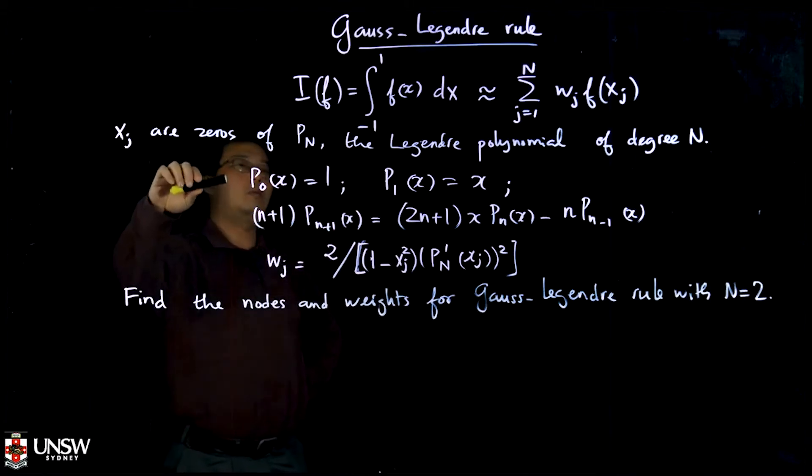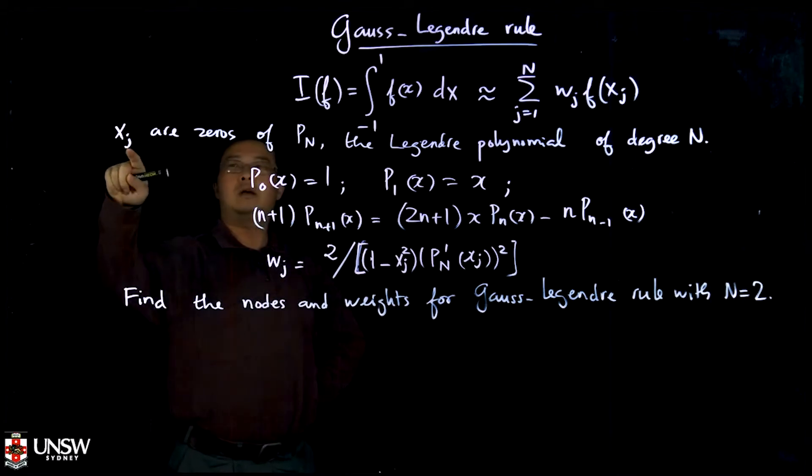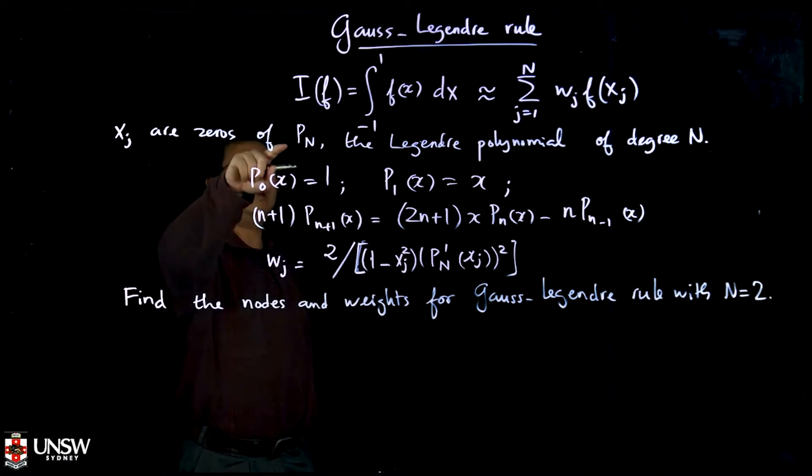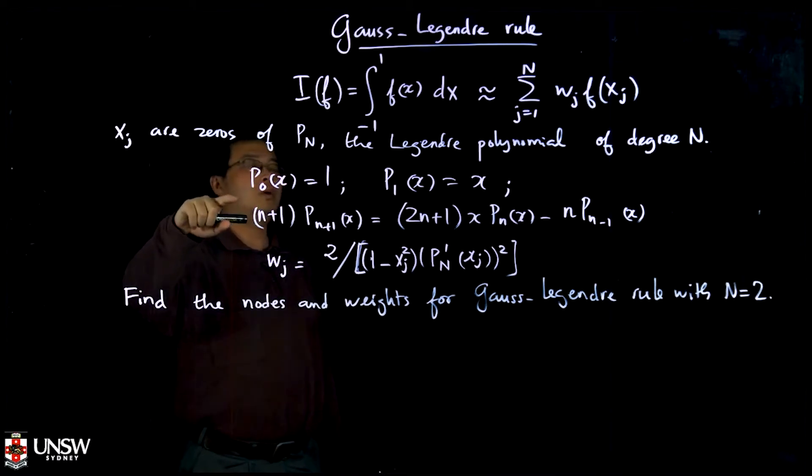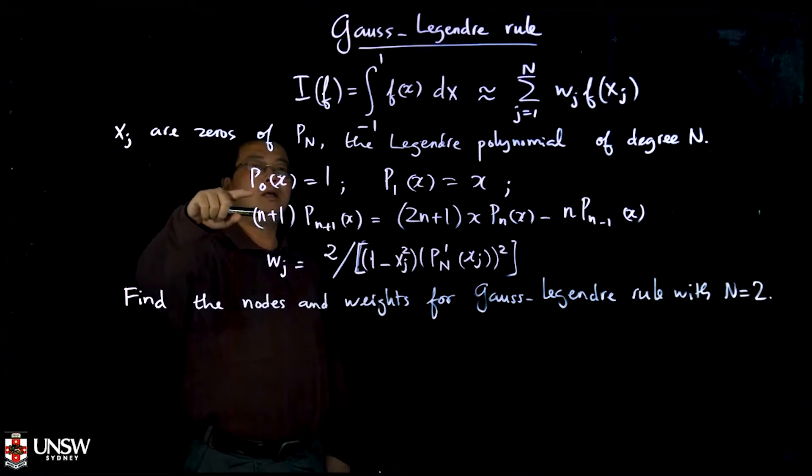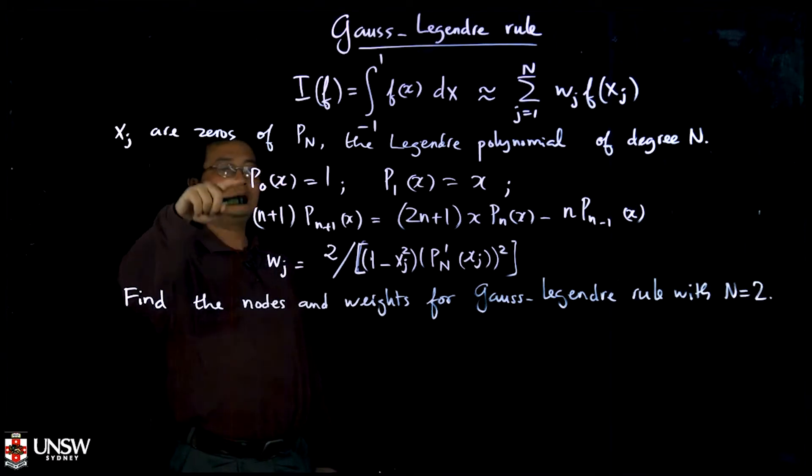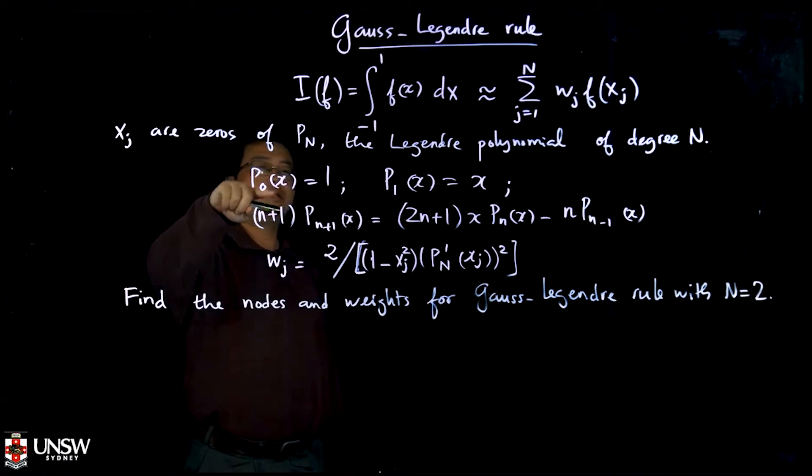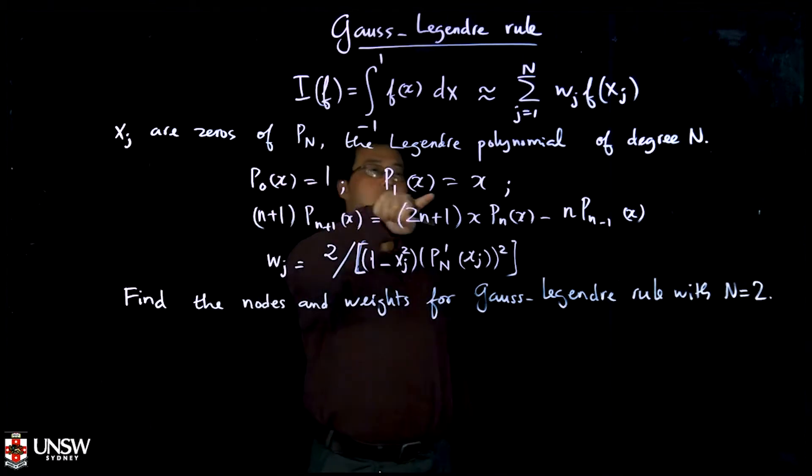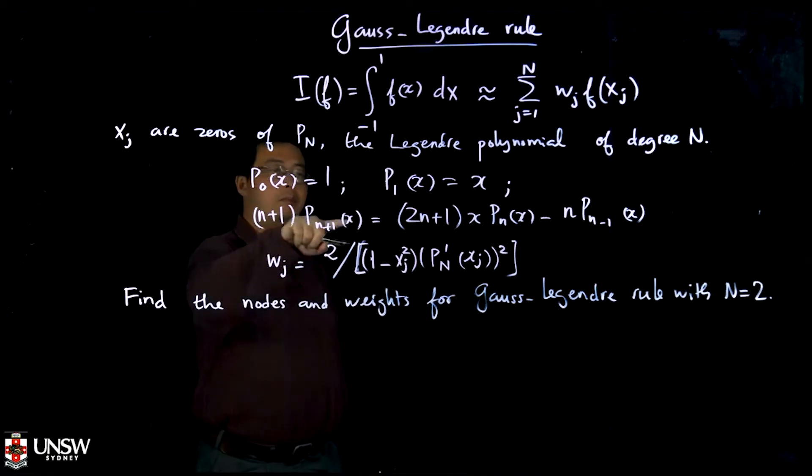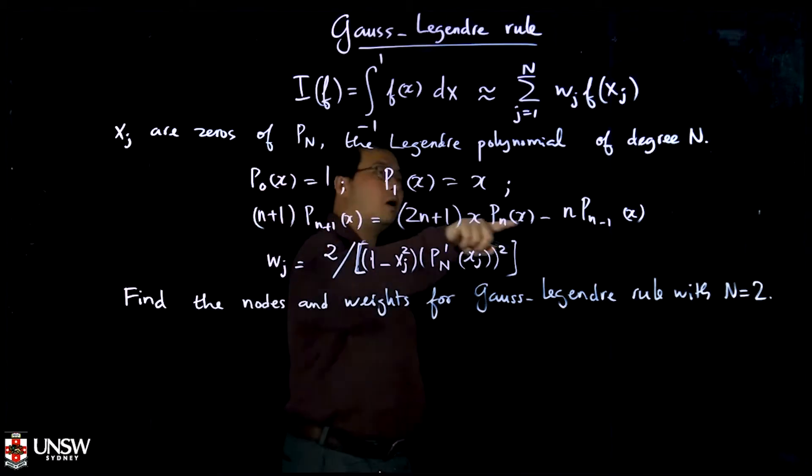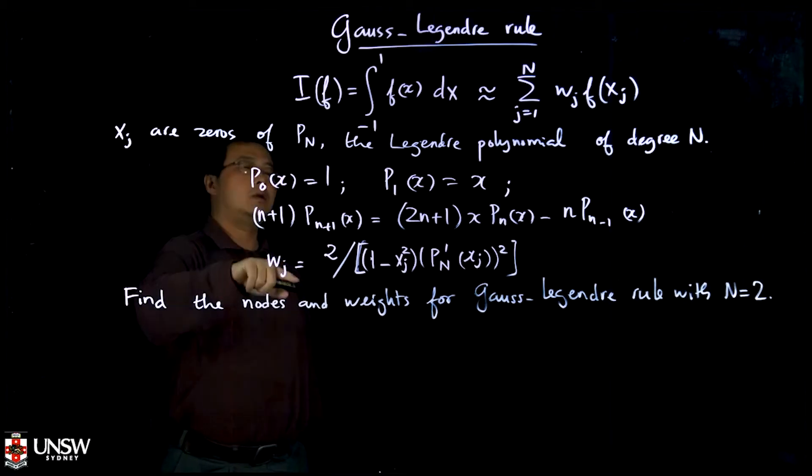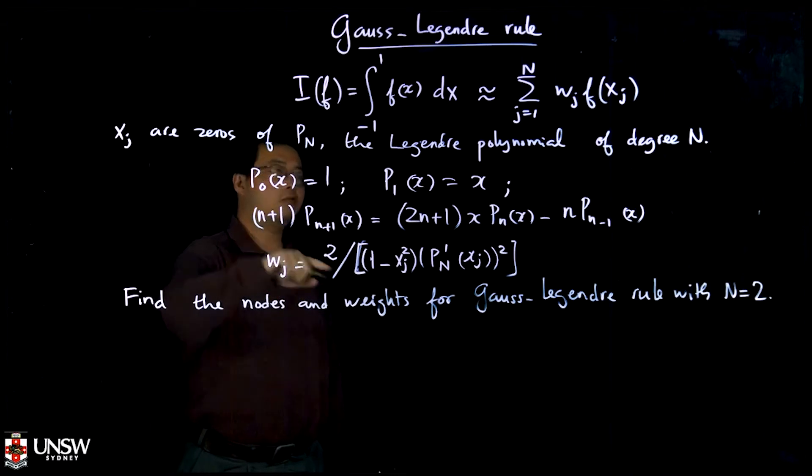The quadrature point xⱼ are the zeros of the Legendre polynomial of degree n. The Legendre polynomial of degree n is defined recursively by this formula: P₀ is given, it's just one, and P₁ is just equal x, and then Pₙ₊₁ can be defined by this recursive formula. Once you have the zeros of the polynomial, then you can find the weights by this formula.